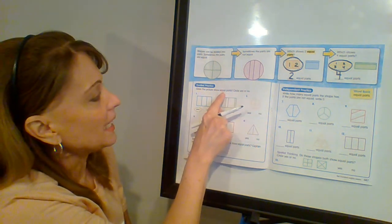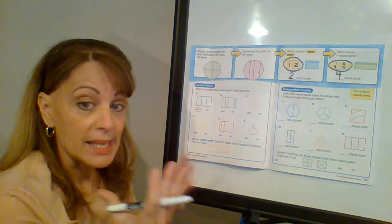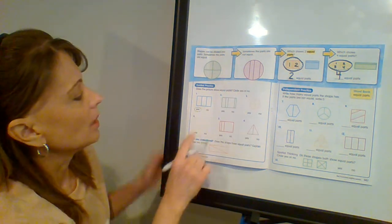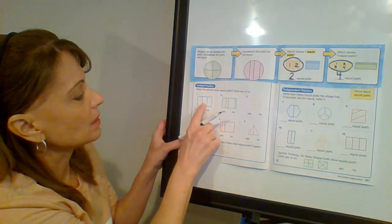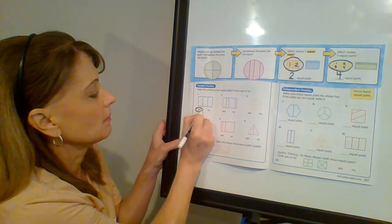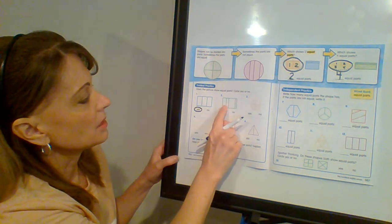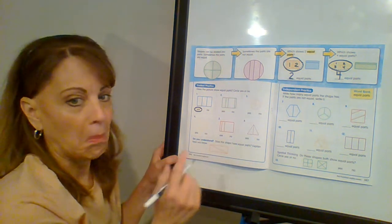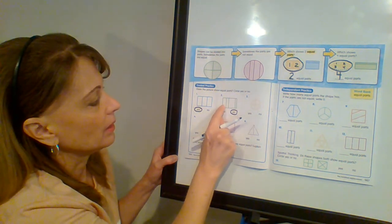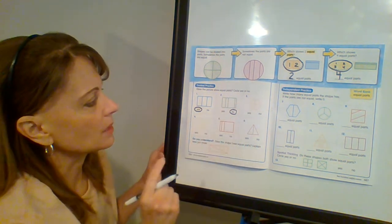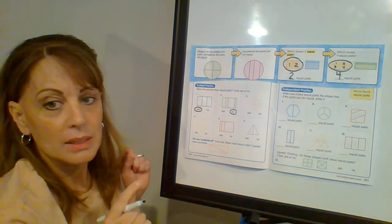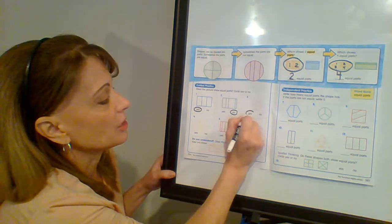Does the picture show equal parts? Remember, equal means the same size and shape. Exactly equal. Circle yes or no. So let's look. Are these parts equal? Yes or no? Yes. How about these? Does this show equal parts? No. That piece is way bigger than that one. That one's bigger than that one. That one's the biggest of all. How about number three? Do those show equal parts? Yes. Go ahead and circle yes.